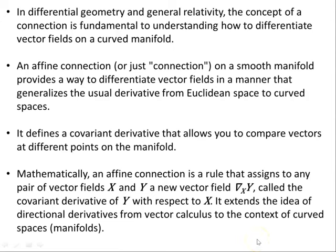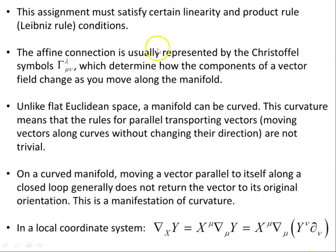In differential geometry and general relativity, the concept of a connection is fundamental to understanding how to differentiate vector fields on a curved manifold. An affine connection, on a smooth manifold, provides a way to differentiate vector fields in a manner that generalizes the usual derivative from Euclidean space to curved spaces. It defines a covariant derivative that allows you to compare vectors at different points on the manifold.